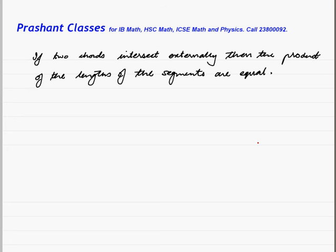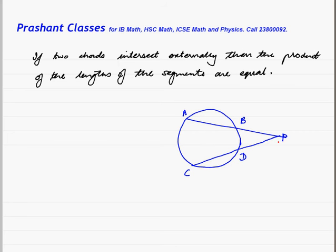If two chords intersect externally, you have been given a circle, chord AB produced and CD produced. Let's say they intersect at point P. We will prove that the product of their segments are equal.